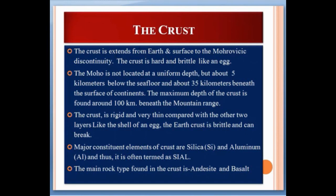The crust is the first layer of the Earth. It extends from the Earth's surface to the Mohorovičić discontinuity. The Moho is not located at a uniform depth — it is about 5 kilometers below the sea floor and about 35 kilometers beneath the surface of the continents. The maximum depth of the crust is found around 100 kilometers beneath mountain ranges. The crust is rigid and very thin compared with the other two layers, like the shell of an egg.